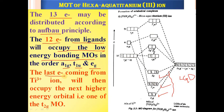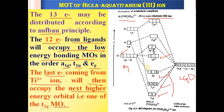The remaining one electron, coming from Ti³⁺, occupies the next higher energy orbital, which is the T2G non-bonding molecular orbital. The T2G orbital is at a higher energy than the bonding molecular orbitals. This gives the overall molecular orbital diagram of [Ti(H₂O)₆]³⁺, the hexa aqua titanium(III) ion.